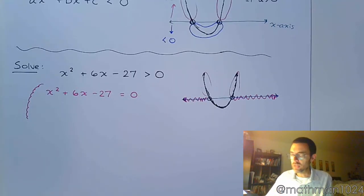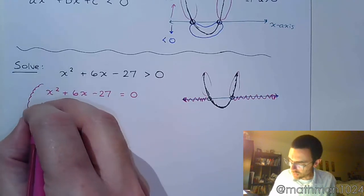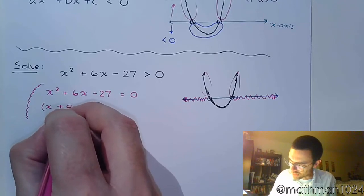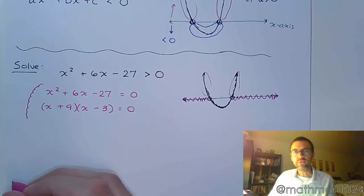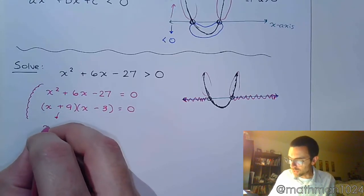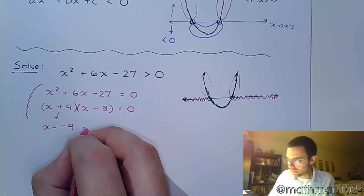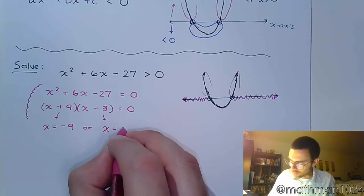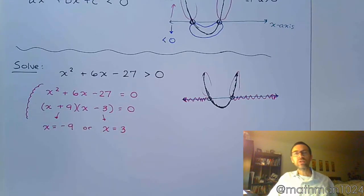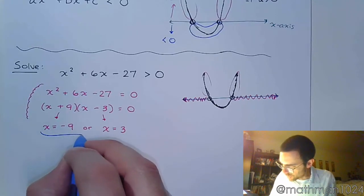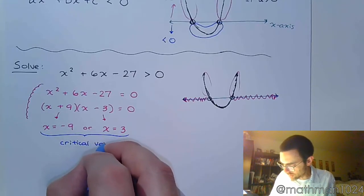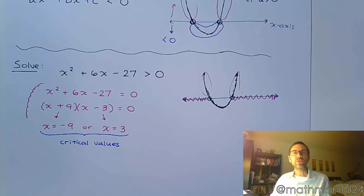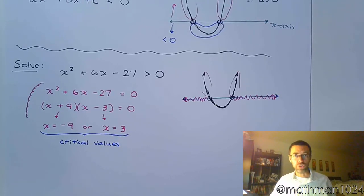Fortunately, this factors as x plus 9 times x minus 3. Solving by the zero factor theorem, we get x equals negative 9 or x equals positive 3. We refer to these numbers as our critical values — the values at which the expression can change signs from positive to negative.